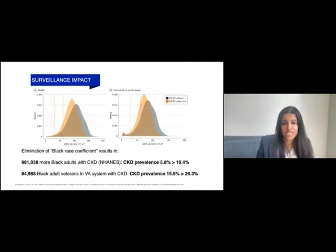Removal of the race coefficient has enormous impact on surveillance. Using NHANES and VA data, removal of the Black race coefficient from CKD-EPI was associated with a substantial increase in the estimated prevalence of chronic kidney disease among U.S. Black adults. We're talking about nearly one million more diagnoses of individuals with CKD Stage 3 or higher.